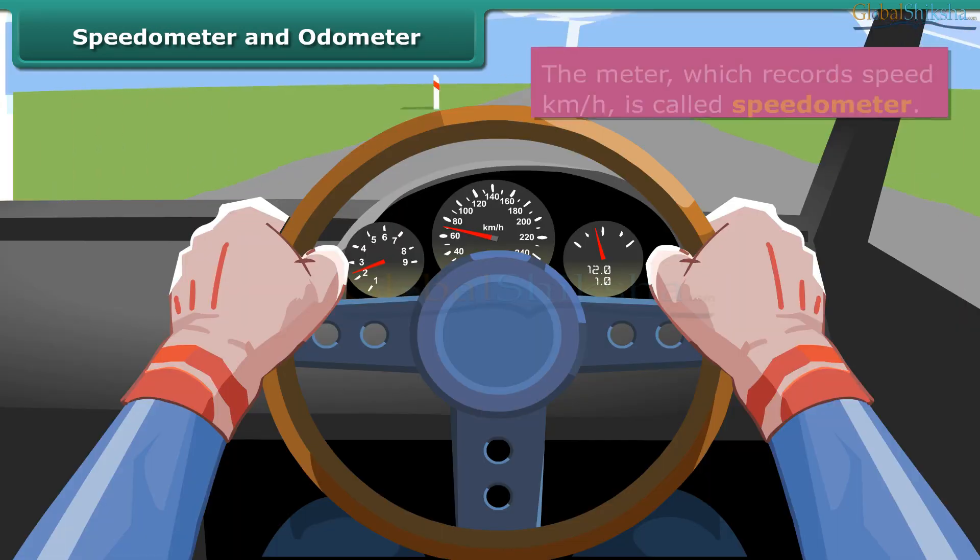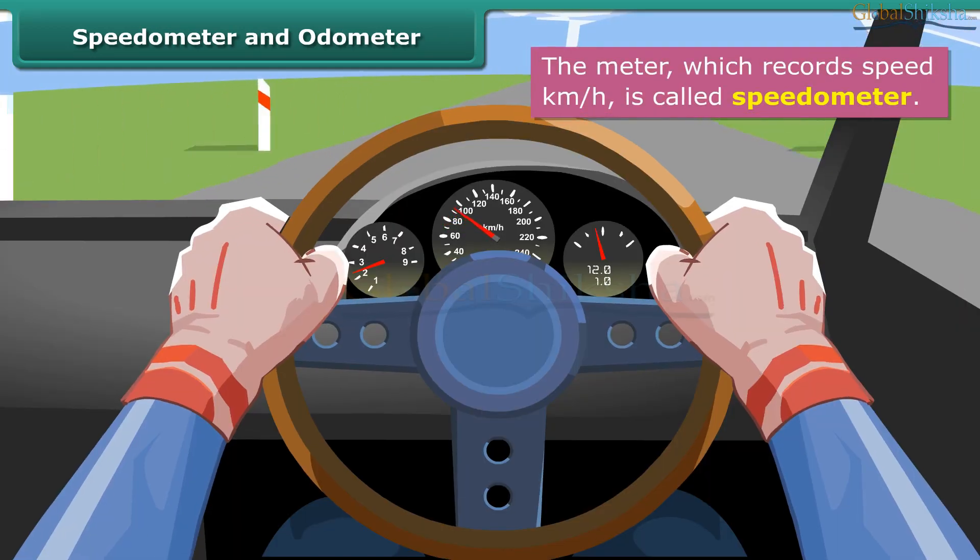Do the meters and indicators in front of the driver's seat of your father's car scare you? Now they won't. Straight beyond the steering wheel are 2 meters. The circular dial, which looks somewhat like a clock with needles and numbers, is the speedometer. When the car is in motion, one needle points to a particular number in the speedometer. This number is the speed of the car in km per hour.